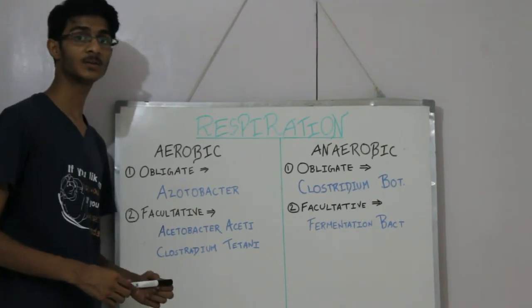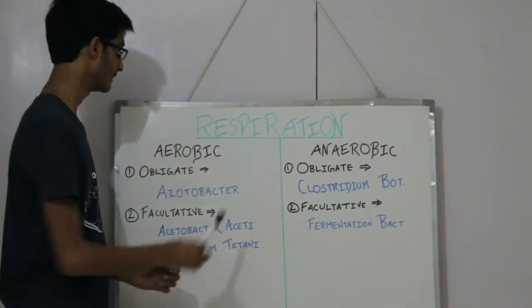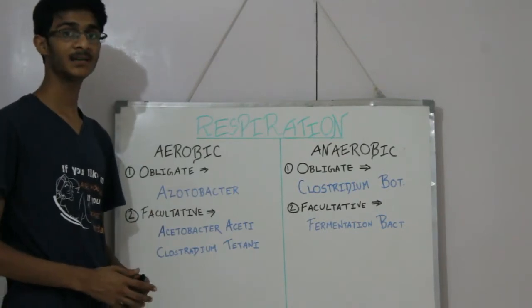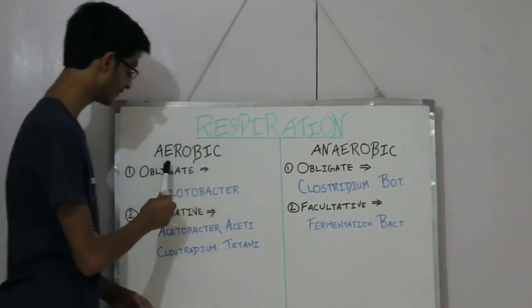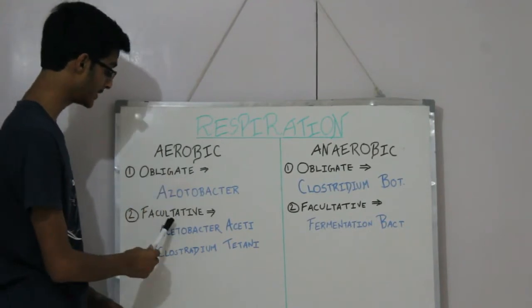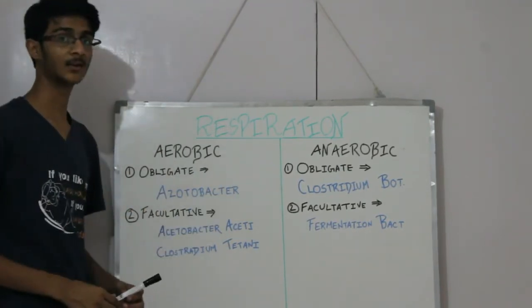So there are two types of respiration that occur: aerobic and anaerobic. These are based on whether oxygen is used or not used. The aerobic is further classified into obligate and facultative. Same is the case with anaerobic.